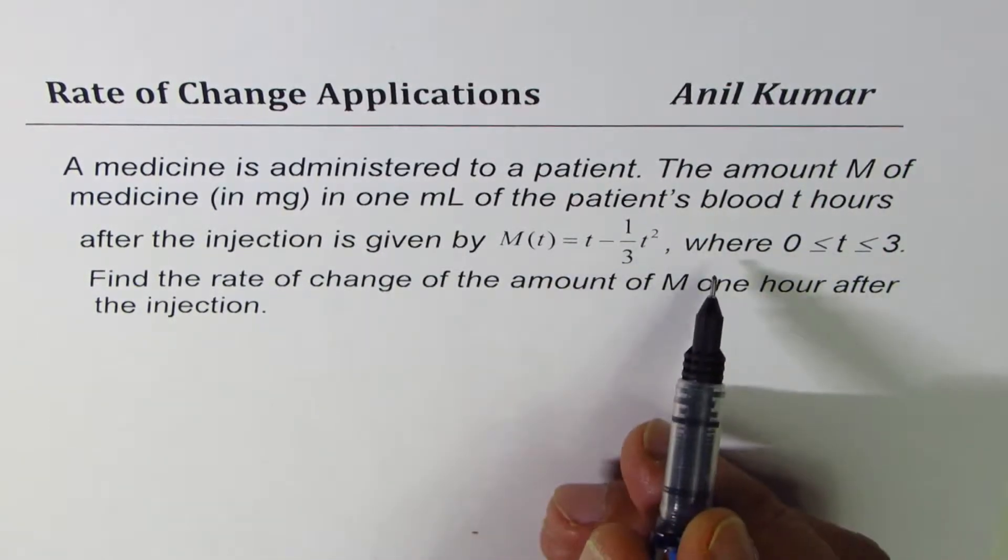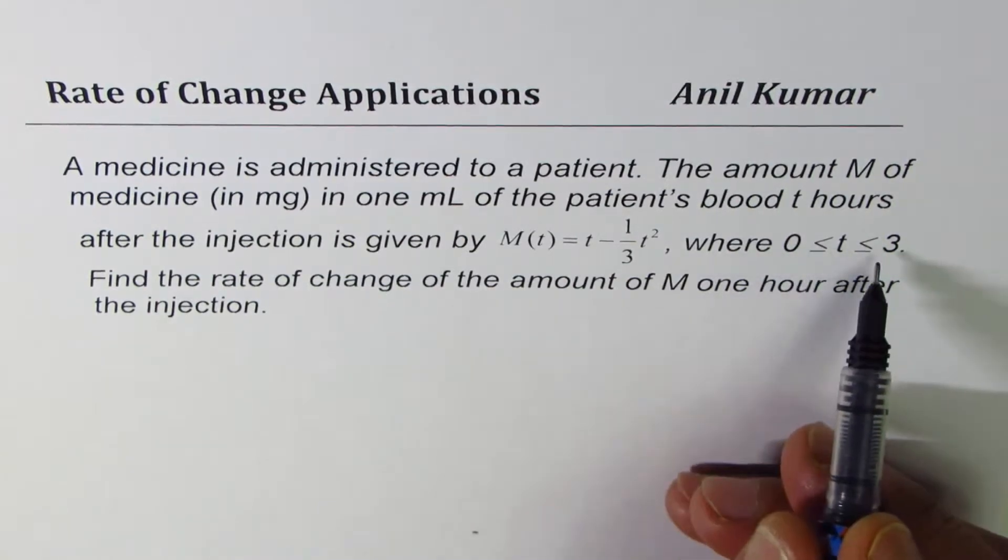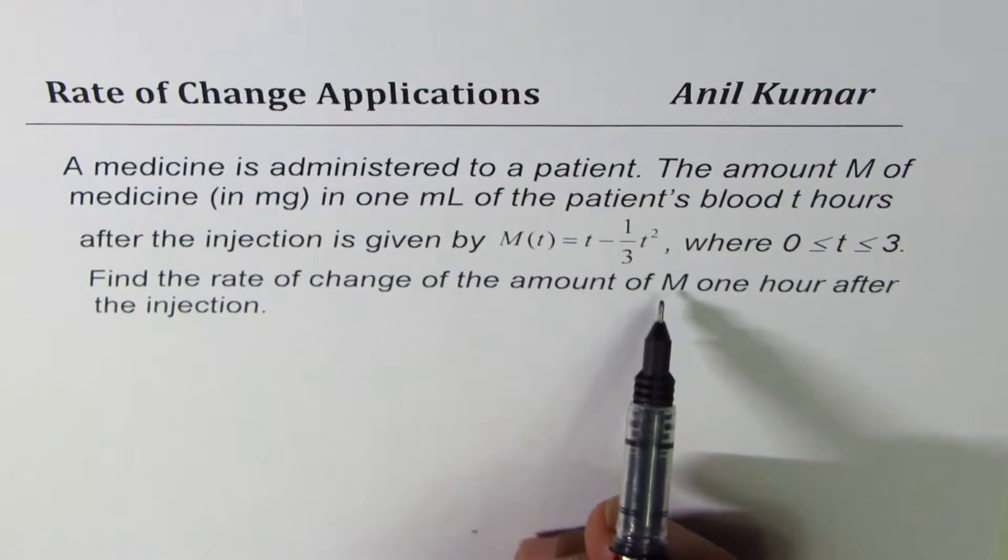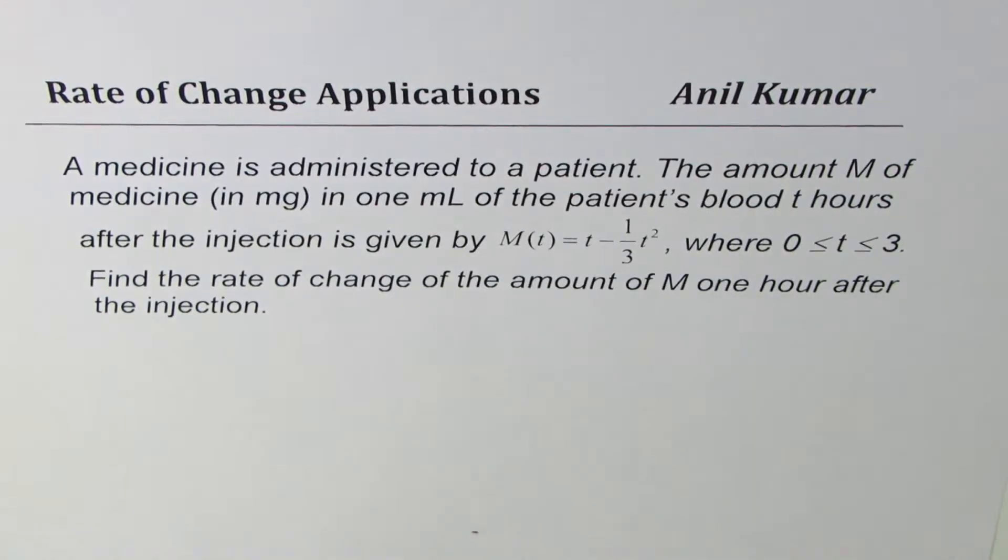where t is between 0 and 3. Find the rate of change of the amount of M one hour after the injection.